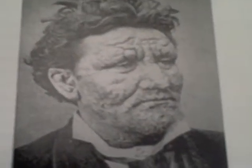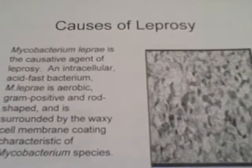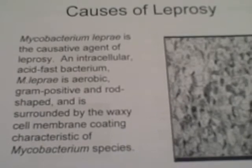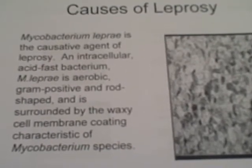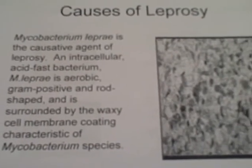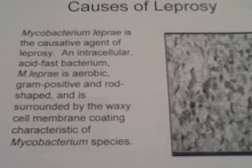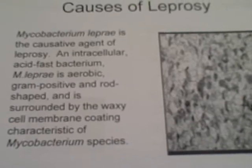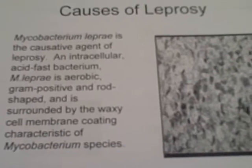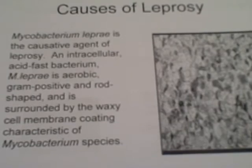Here we see a 24-year-old male with leprosy. Mycobacterium leprae is the causative agent of leprosy — an intracellular acid-fast bacterium. Mycobacterium leprae is aerobic, gram-positive, and rod-shaped, and is surrounded by the waxy cell membrane coating characteristic of Mycobacterium species. As an acid-fast bacterium, Mycobacterium leprae appears when a Ziehl-Neelsen stain is used.